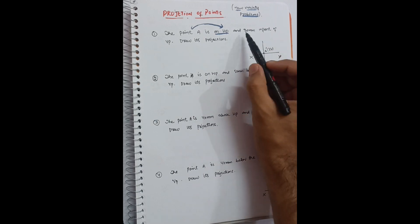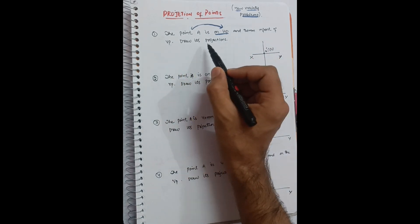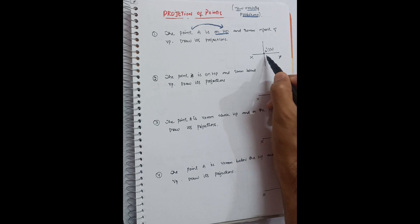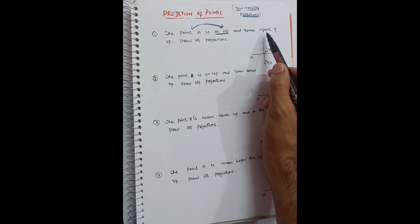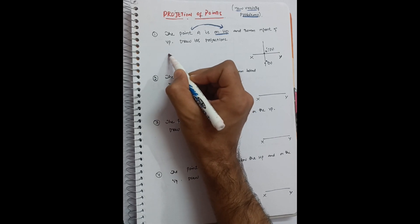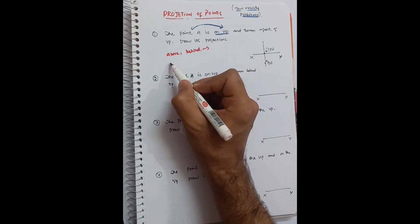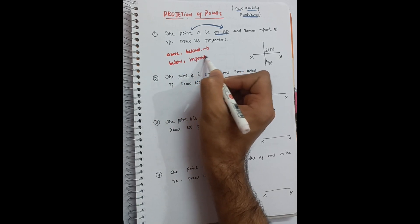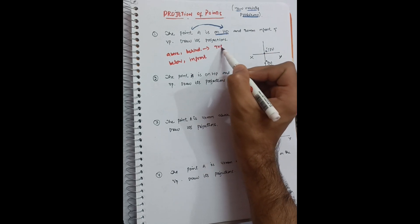Now, 30 mm in front of VP: whenever the relationship of a point is with VP, you draw the top view. So this gives us the top view, 30 mm below the reference line. Remember these two important terminologies: 'above' and 'behind' — top view on the upper side of the reference line; 'below' and 'in front' — top view on the below side of the reference line.